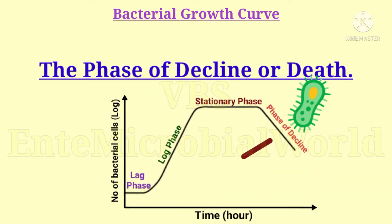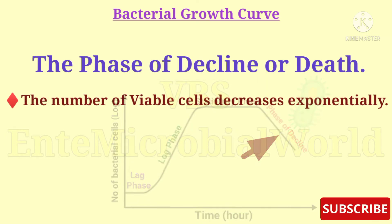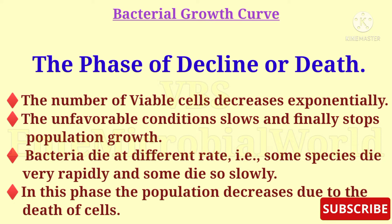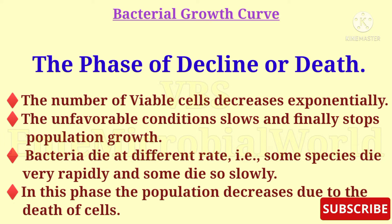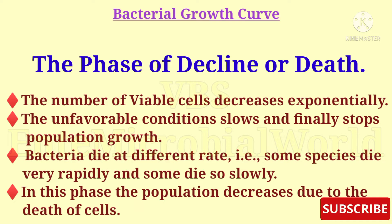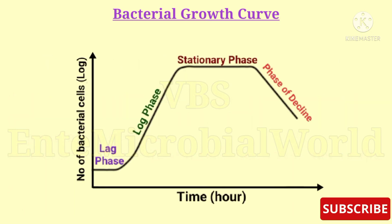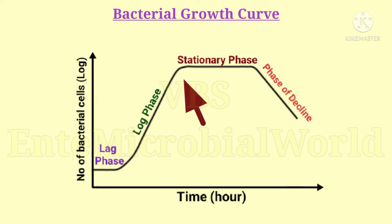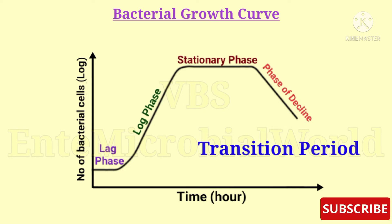The next phase is the phase of decline or death. During the death phase, the number of viable cells decreases exponentially — it seems to be like the inverse of growth during the log phase. The unfavorable conditions slow and finally stop population growth. Bacteria die at different rates; some species die very rapidly and some die very slowly. In this phase, the population decreases due to the death of cells. If you observe the growth curve, you can also find a curved portion between each of these phases, known as a transition period, which represents the time required before all cells enter the new phase.